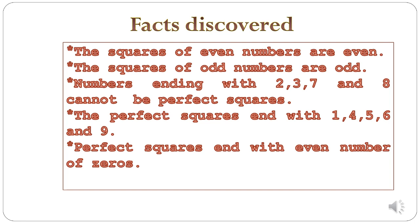We have seen that the squares of even numbers are even. For example, 2 square is 4 and 4 square is 16. The squares of odd numbers are odd. For example, 1 square is 1 and 3 square is 9.